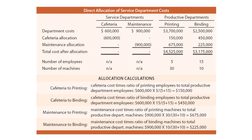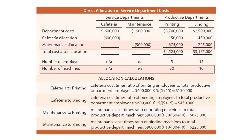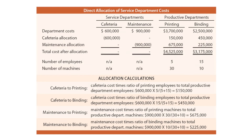On the bottom portion of this slide are the supporting calculations. This schedule is exactly reproduced in your textbook. We would do the same thing for maintenance — allocating maintenance directly to printing and binding. Totaling up, cafeteria and maintenance have been zeroed out, so there's no unallocated cost from the service departments. And printing and binding have been boosted respectively by those particular costs to get the total cost to our printing and binding activities.